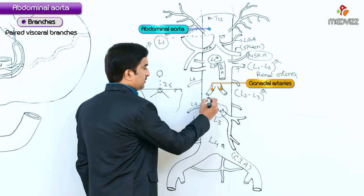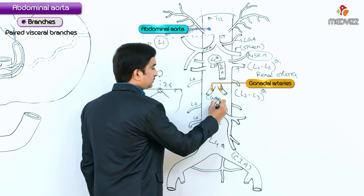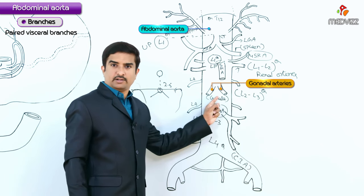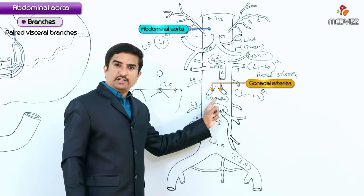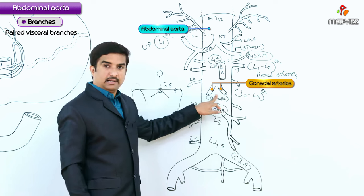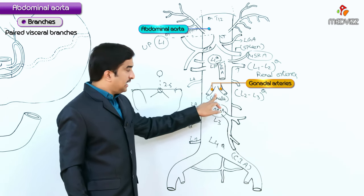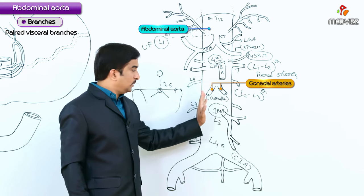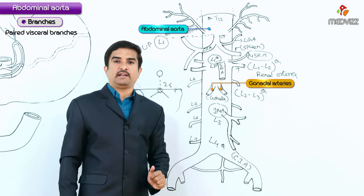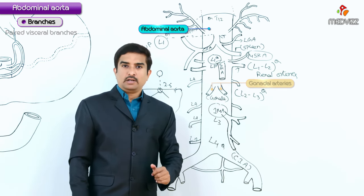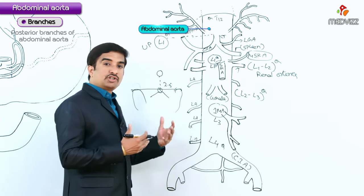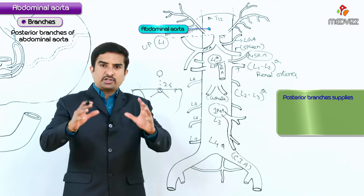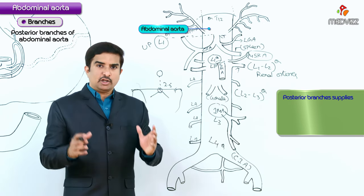The next paired visceral branches are the gonadal arteries — also called testicular or ovarian arteries. These are anterior branches of the abdominal aorta that arise below the origin of the renal arteries and pass downwards and laterally to supply the related structures.